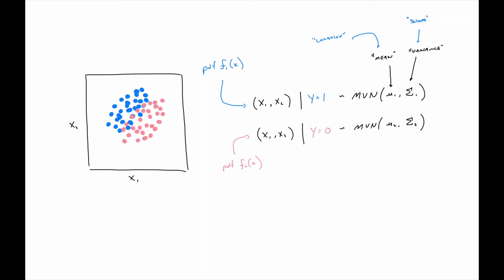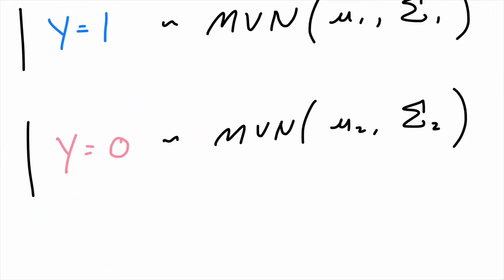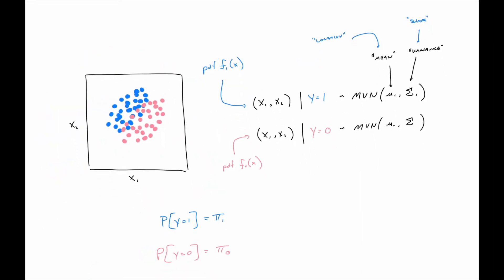I'm also going to define two more quantities. So if we ignore x1 and x2, and we just wanted to talk about things like the probability that y equals one, I'm going to label that quantity pi sub one. And if we want to talk about the probability that y equals zero, I'm going to call that quantity pi sub zero.